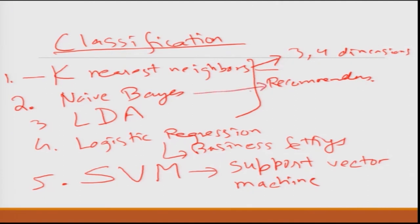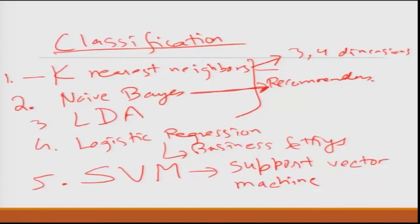Naive Bayes is good for recommendation systems. It assumes independence of different parameters, which is rarely the case in real-life business scenarios. Hence Naive Bayes should be used very sparingly beyond online methods, image detection, or cancer pattern recognition. LDA is very powerful but requires a lot of computation, and moving towards QDA becomes even more computationally expensive.